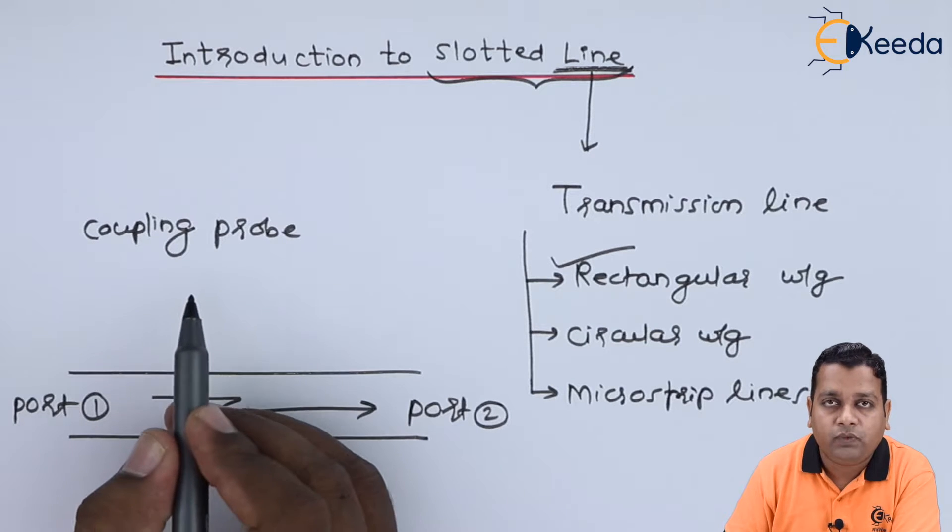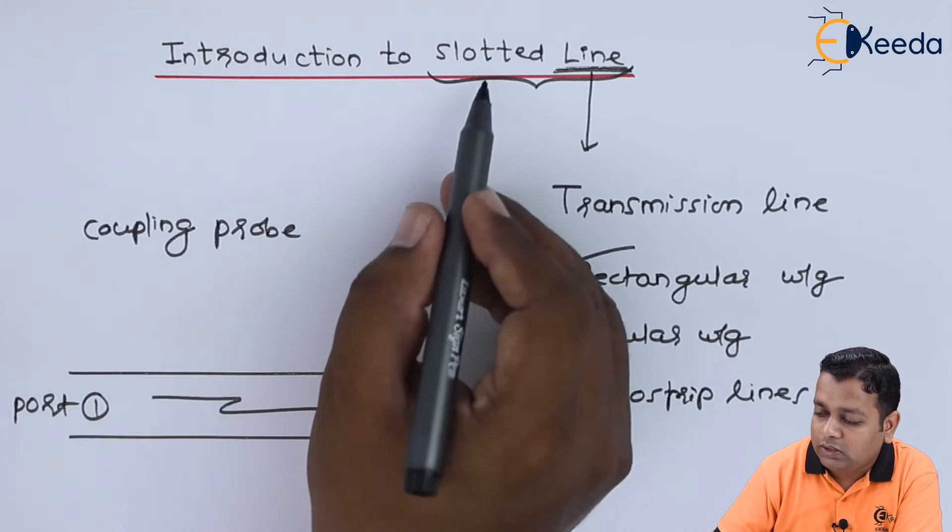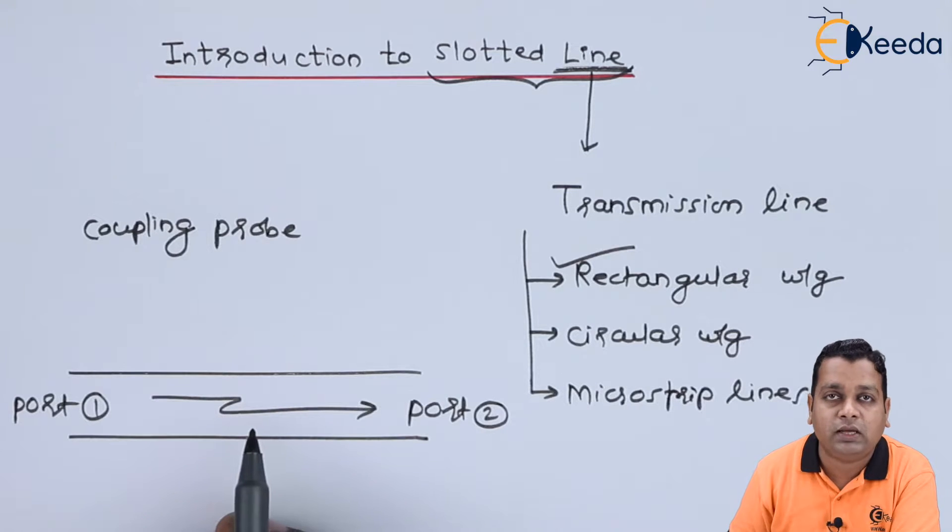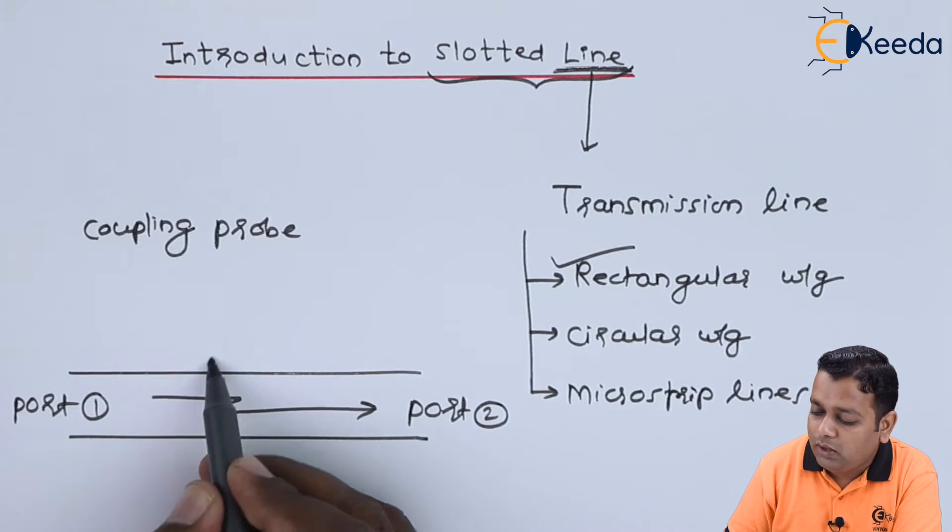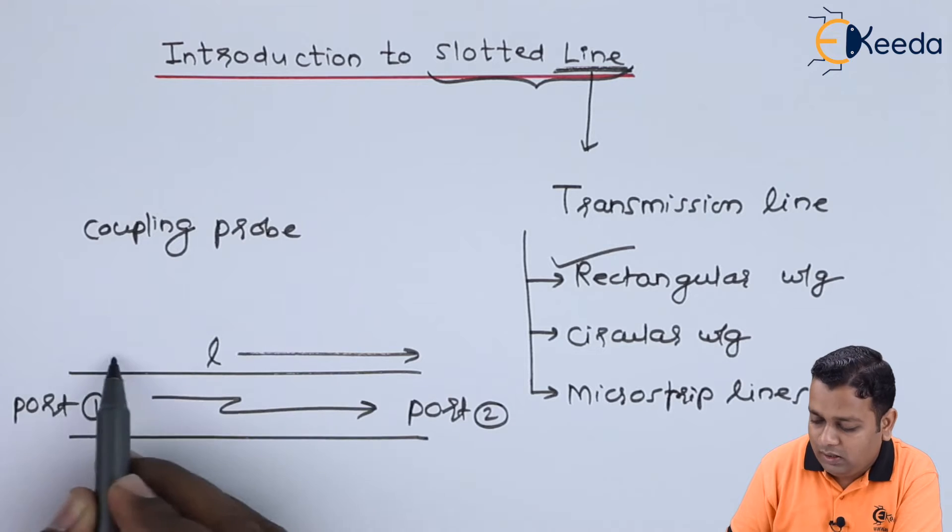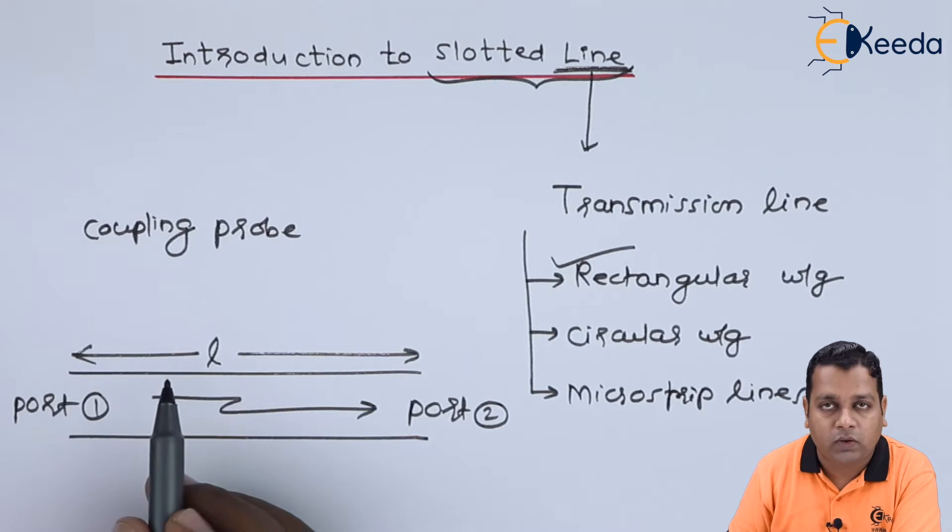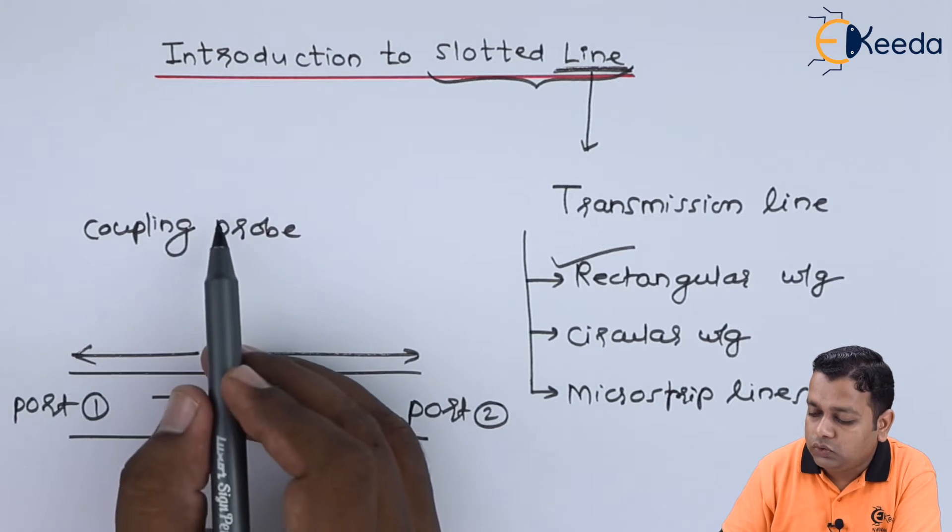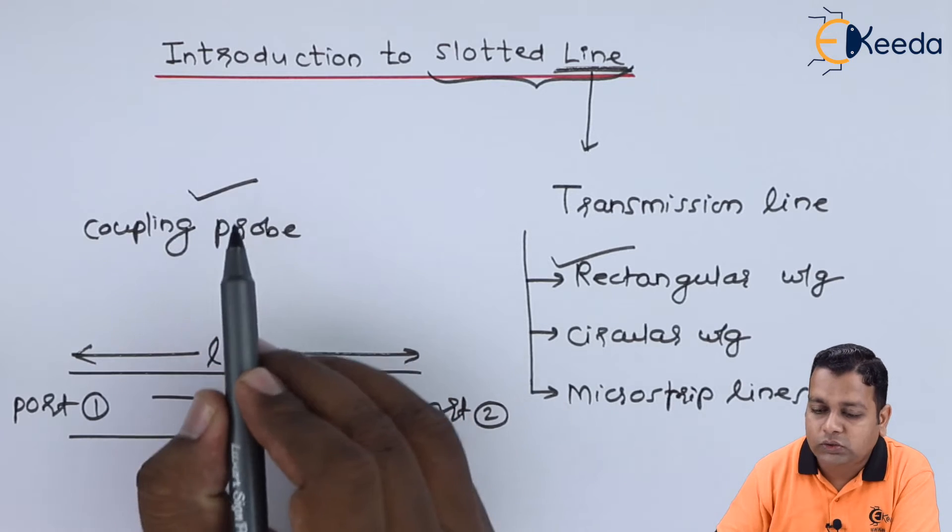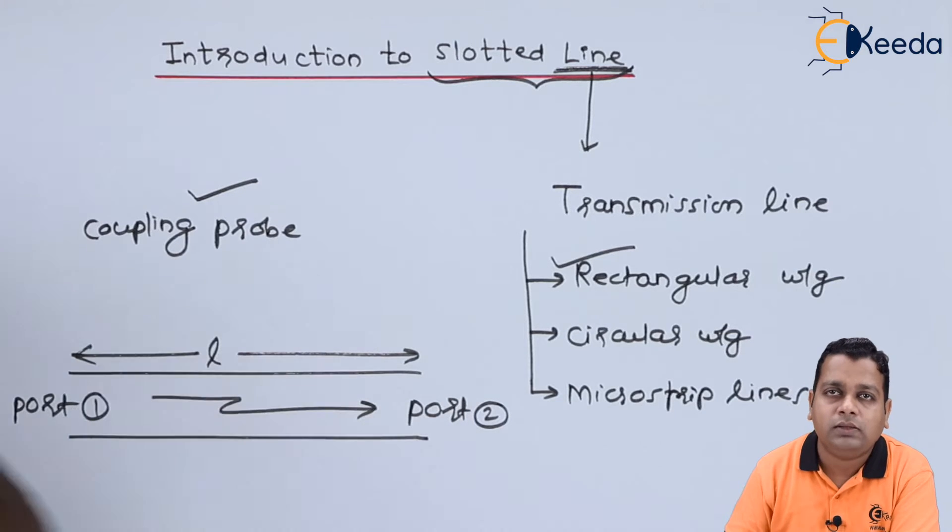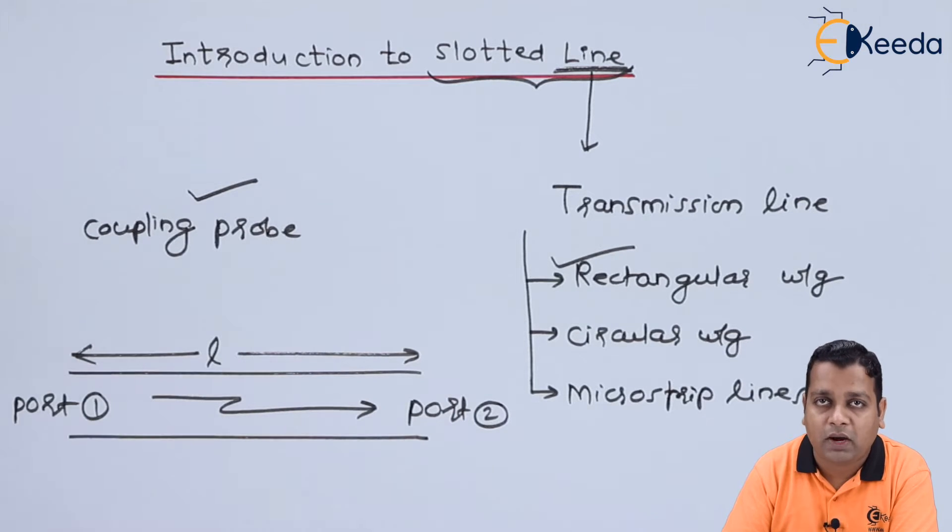The coupling probe that has been mounted over such a slotted transmission line will be moving along the entire length L of the waveguide, and the use of this coupling probe is to have the detection of the standing wave pattern or finally the measurement of standing wave ratio that we generally represent by rho or VSWR.